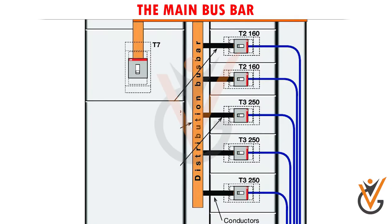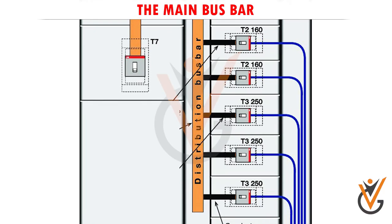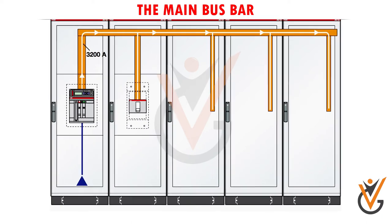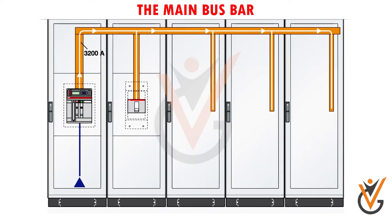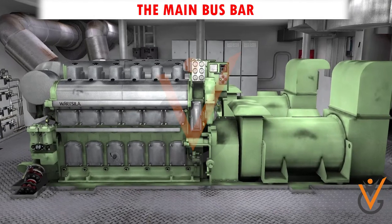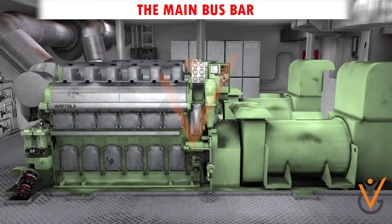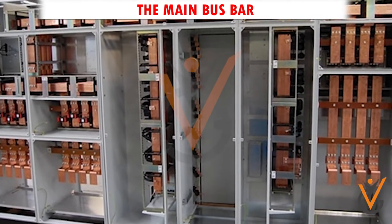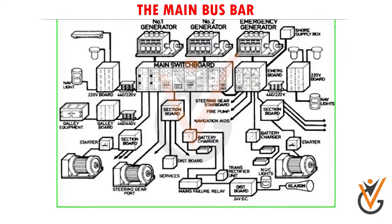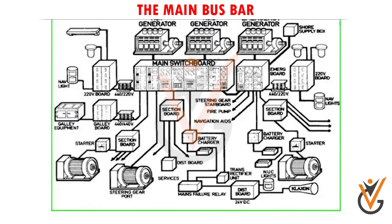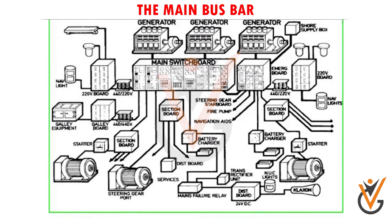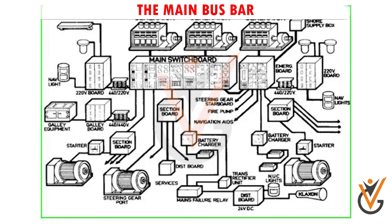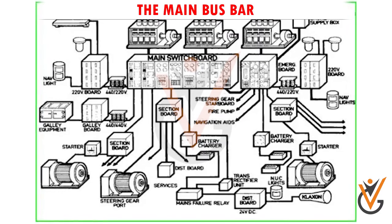The main switchboard is the main power distribution center of the ship, and the main bus bars are contained within it, feeding various shipboard auxiliaries. A ship may contain two or more generators connected to the main bus bar via circuit breakers. From the main bus bar, electrical power is supplied to various shipboard auxiliaries like pumps, blowers, compressors, etc.